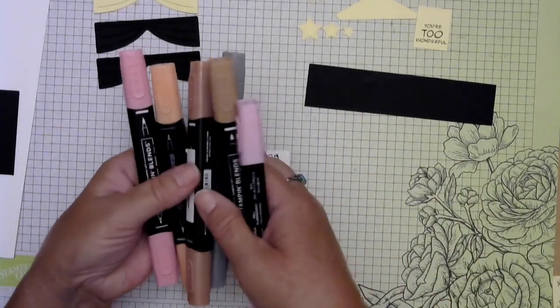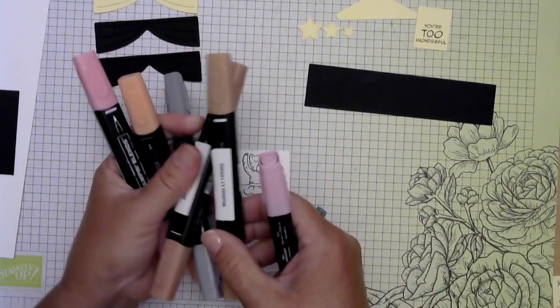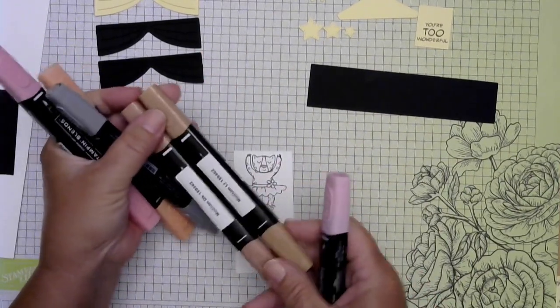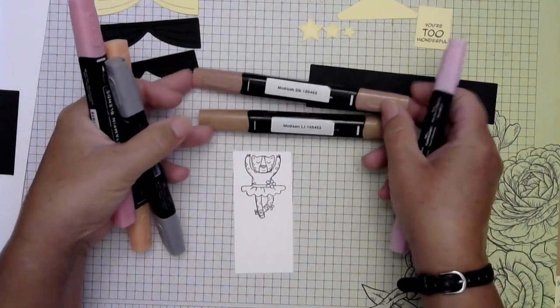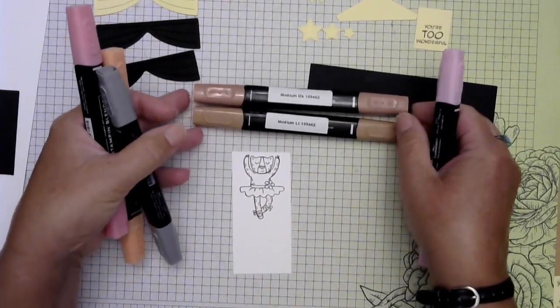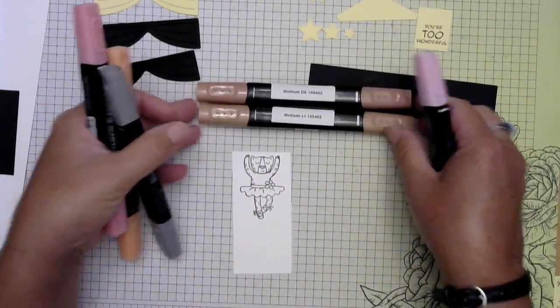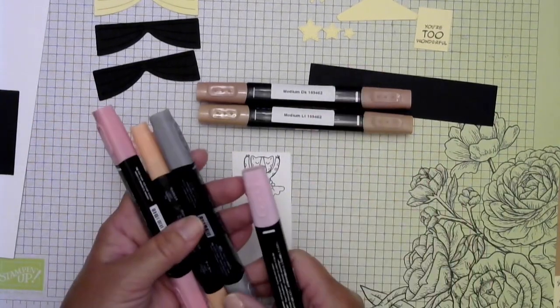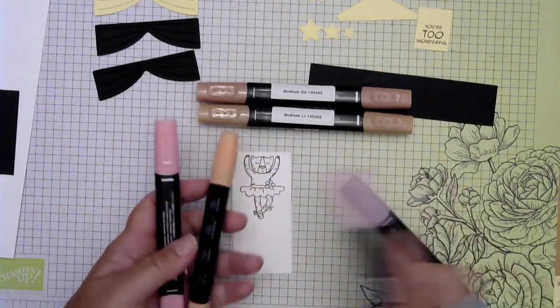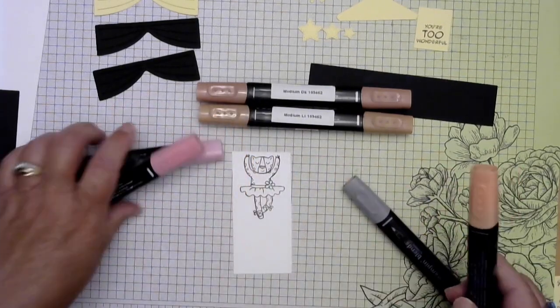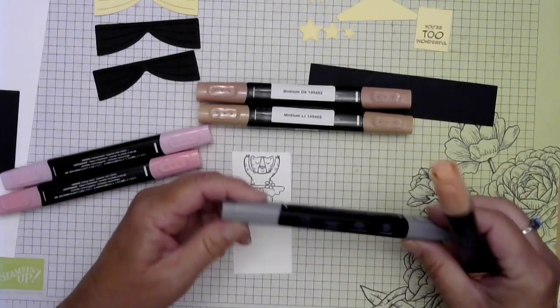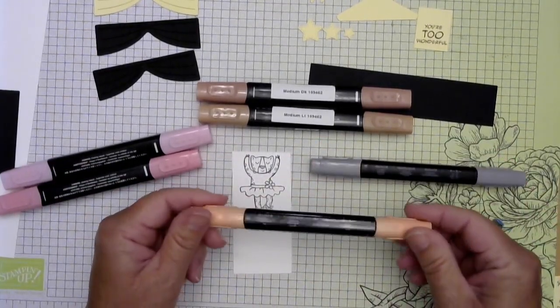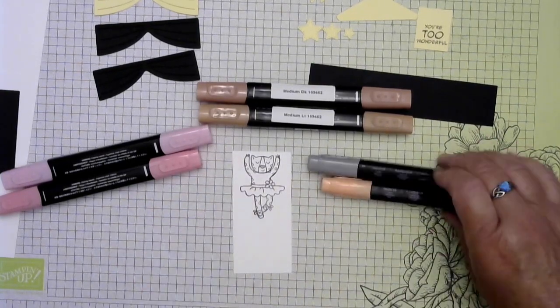So I just chose some browns and these are the natural tone neutrals. There's a whole set of like 10 of them and I chose the medium and then I have the light and the dark. And then I've got some flirty flamingo light and dark. And then this is dark smoky slate for her nose and then some light pumpkin pie for her spots.